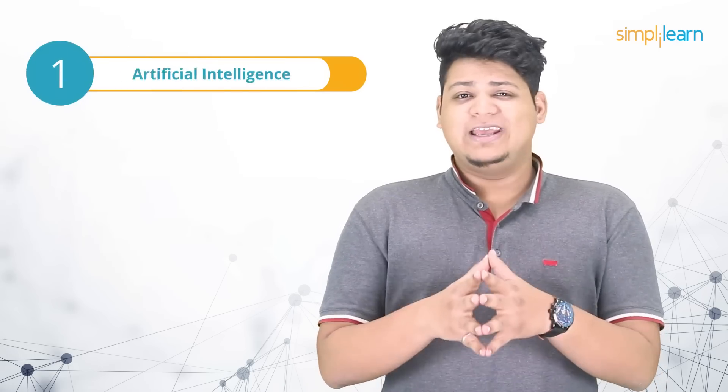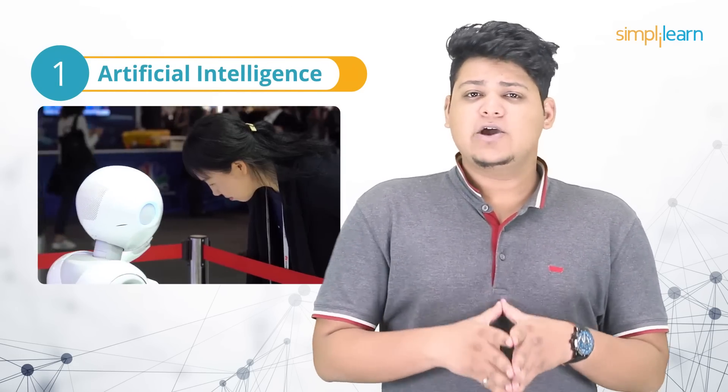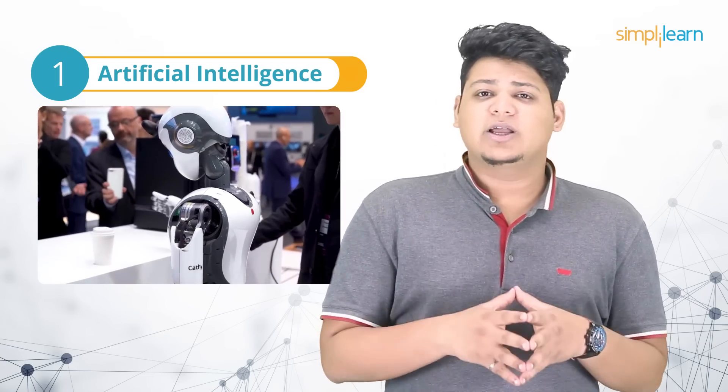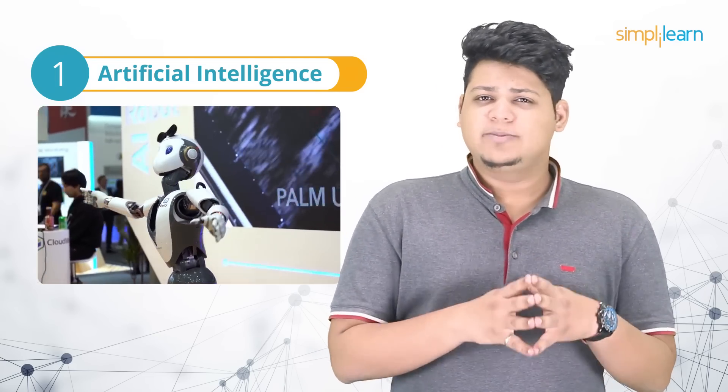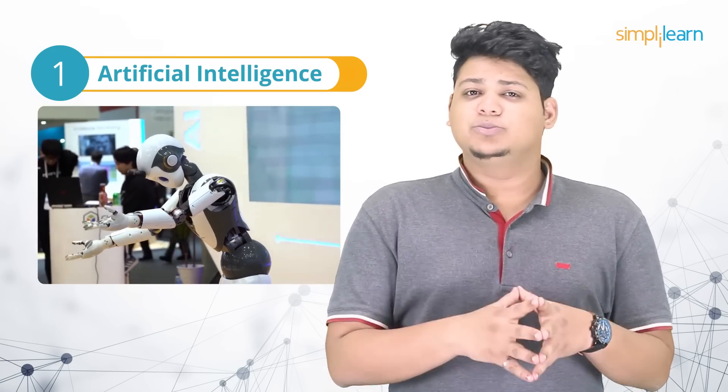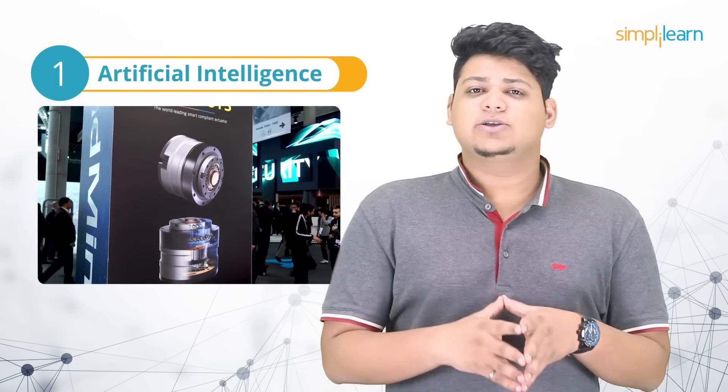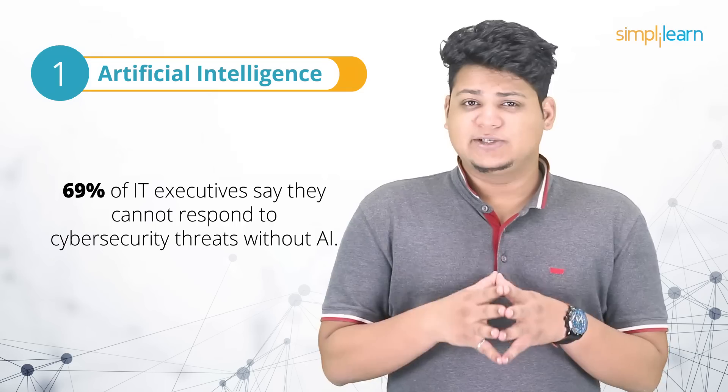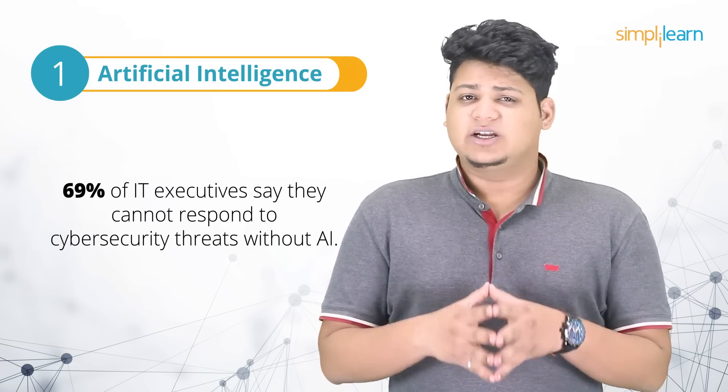And finally, on top of the hierarchy, we have artificial intelligence. Artificial intelligence is an area of computer science that emphasizes on the creation of intelligent machines that work and act like humans. AI is now being used in almost every business sector to reduce human intervention. AI also has a major role to play in cybersecurity and digital marketing. 69% of IT executives say that they cannot respond to cybersecurity threats without artificial intelligence.